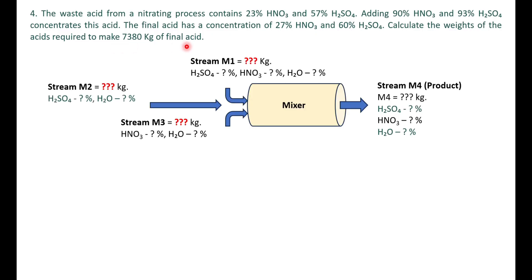To solve this problem, draw the schematic: three inlet streams and one product stream. Stream m1 is the waste acid from the nitrating process, containing 23 percent nitric acid, 57 percent sulfuric acid, and 20 percent water. Stream m2 is the 93 percent sulfuric acid solution — sulfuric acid and water. Stream m3 is the 90 percent nitric acid solution — nitric acid and water, with no sulfuric acid.